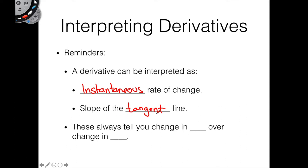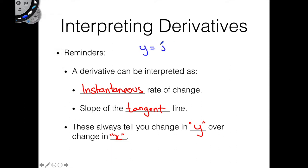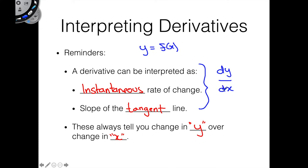Now what do these things tell us? They tell us a change in Y over a change in X. So for some function Y equals F of X, our derivative — these things all tell us what we call DY over DX. It's a change in Y over a change in X. The reason we have a D is just to interpret that it's a very tiny change — a very tiny change in Y over a very tiny change in X. That's where this D comes from, as opposed to a delta, which we normally use. So Y and X can be whatever we want them to be: Y is our dependent variable, X is our independent variable.